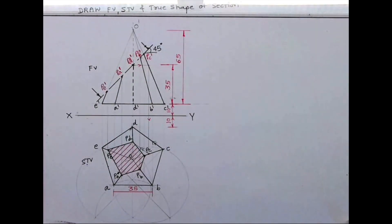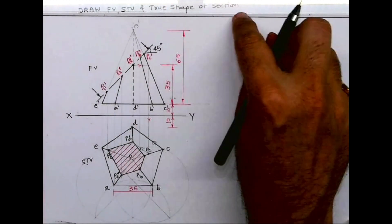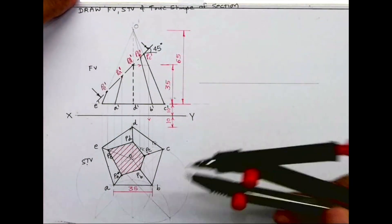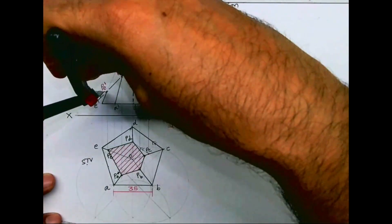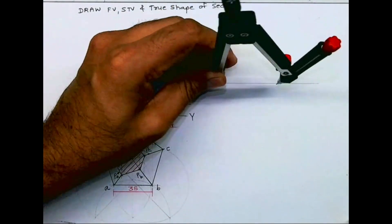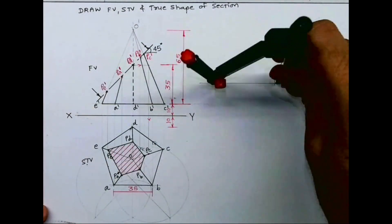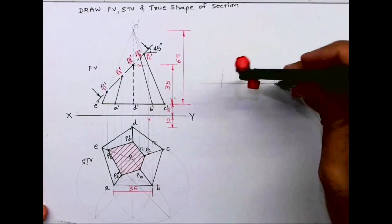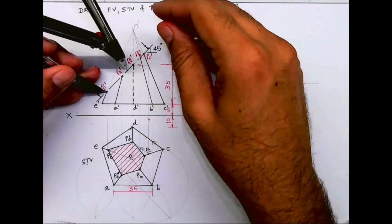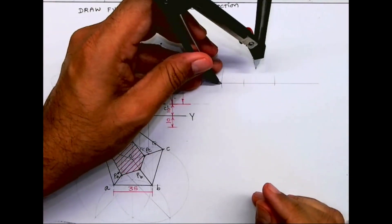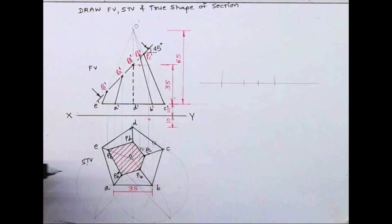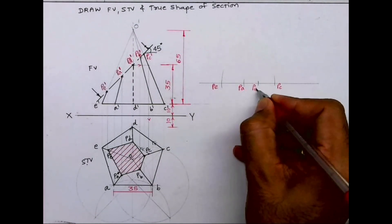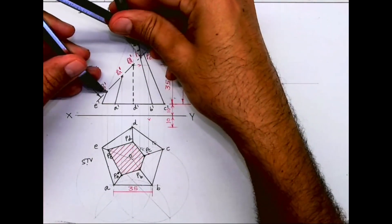We are done with the front view. Now we need to draw the true shape of the section, that is TSS. I will draw one horizontal line and mark points. I will take the cutting plane line and draw it exactly the same, transferring those distances with a compass — PE, PC, PA, PD, and from here PB.